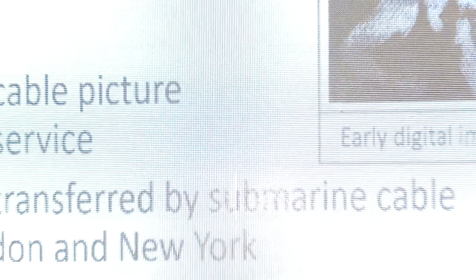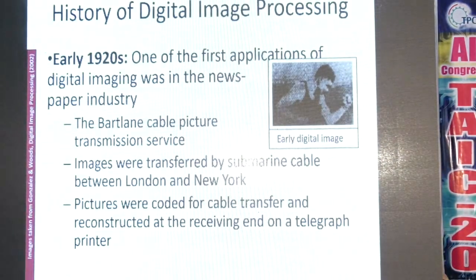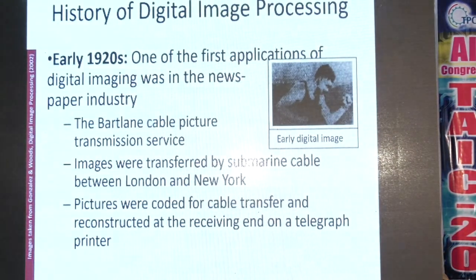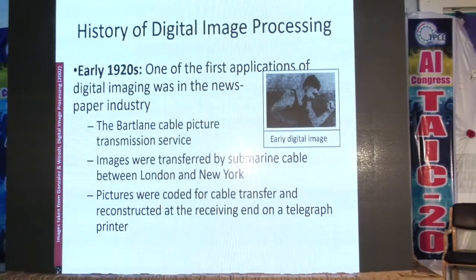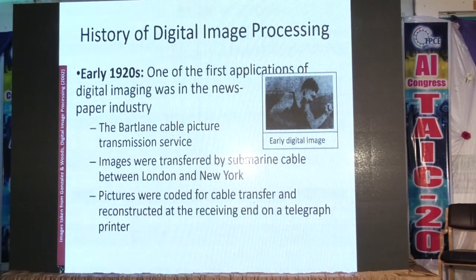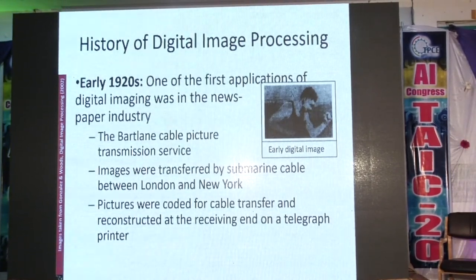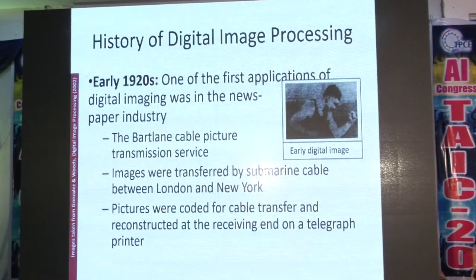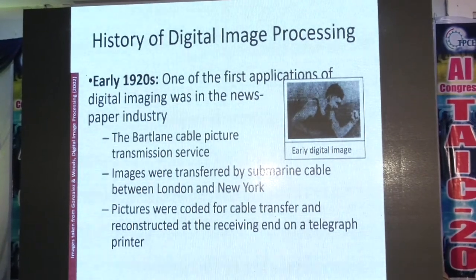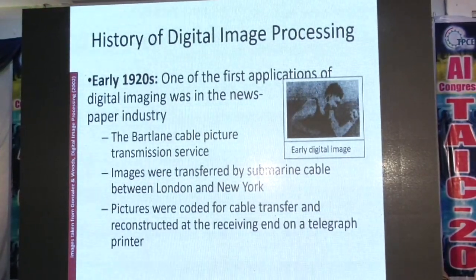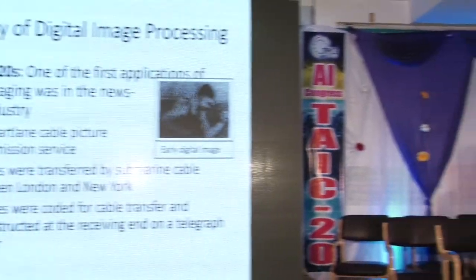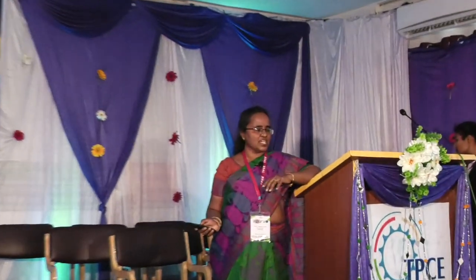If you have considered any image processing, it is started in the 1920s. The first digital image published in a paper is in the 1920s. From there onwards, it has very drastically come forward and quickly developed compared to other fields. Because already existing mathematics — we are just implementing it only on images. So existing things, you are utilizing in a different way. Because of that, there are many more developments present.